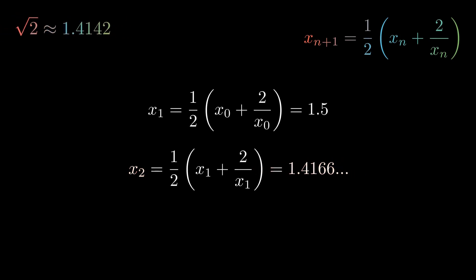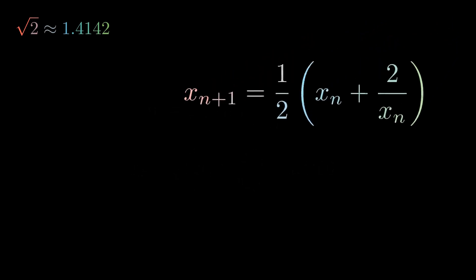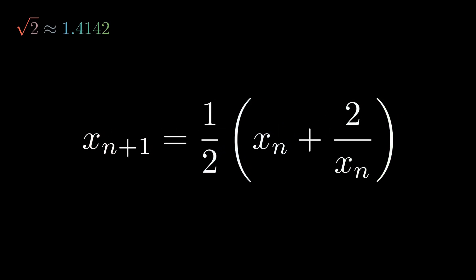By the third term, the sequence already gives a value very close to the square root of 2, calculated solely with additions and divisions, starting from any initial value. Okay, but I promised you can calculate any square root, not just that of 2.